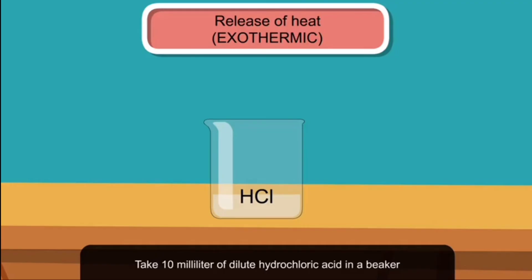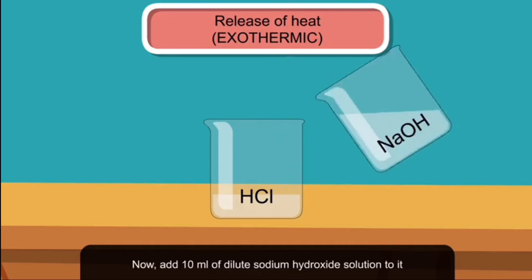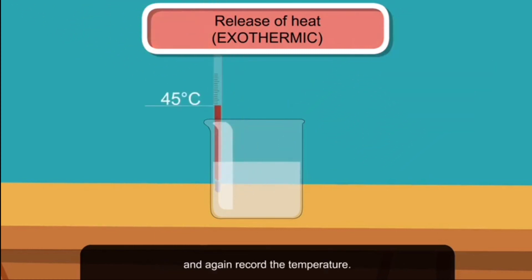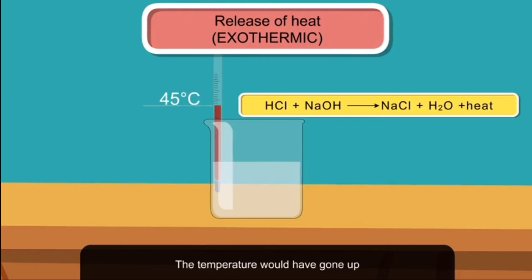Take 10 milliliters of dilute hydrochloric acid in a beaker. Using the laboratory thermometer, record the temperature of the acid. Now add 10 ml of dilute sodium hydroxide solution to it and again record the temperature. What do you find? The temperature would have gone up due to the evolution of heat. The beaker would feel hot to touch.